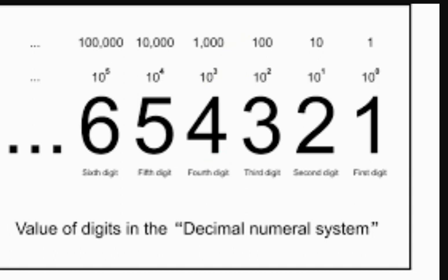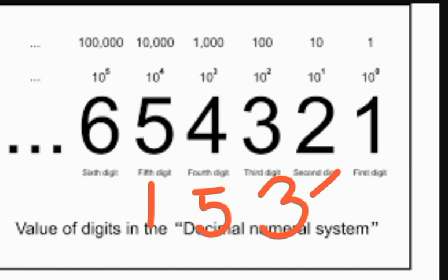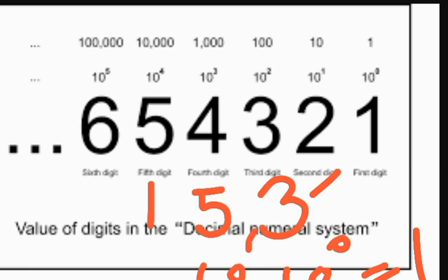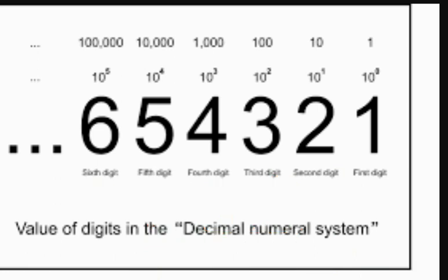You can know the value of each digit. For example, if I write 153, the value of digit 3 would be written as 10 raised to power 0, which is equal to 1. The value of 5 would be 10 raised to power 1, which is 10, and the value of 1 would be 10 raised to power 2, which is equal to 100.